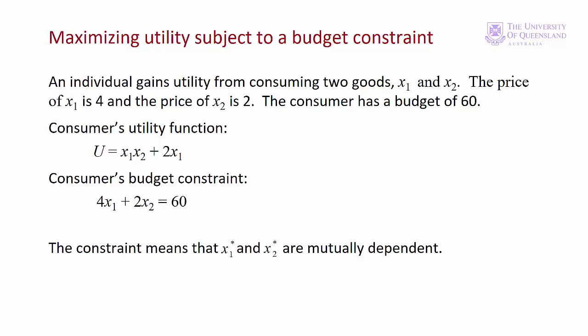A consumer obtains utility from consuming two goods x1 and x2. Here's our consumer's utility function — it tells us something about these goods. The consumer gains utility from consuming good x1 by itself, but she also gains utility when she consumes some x2 with x1. Good x2 is not consumed by itself. For example, x1 could be coffee and x2 a chocolate cookie, so the consumer drinks coffee by itself and sometimes increases her satisfaction by having a chocolate cookie with her coffee.